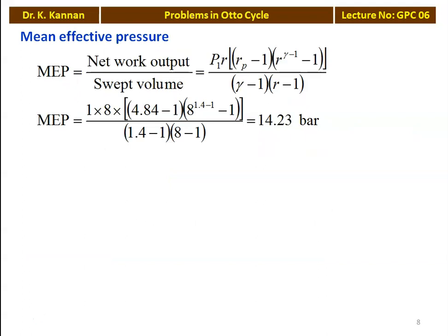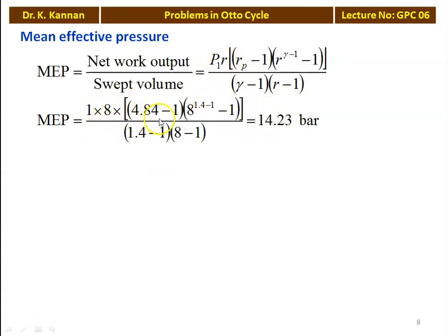The mean effective pressure is defined as net work output divided by swept volume. The equation is: MEP equals P1 × R × (Rp - 1) × (R^(gamma-1) - 1) / [(gamma - 1) × (R - 1)]. Substituting P1 equals 1 bar, R equals 8, Rp equals 4.84, and gamma equals 1.4 gives MEP equals 14.23 bar.